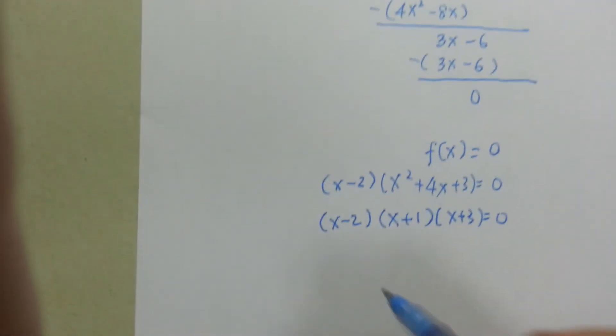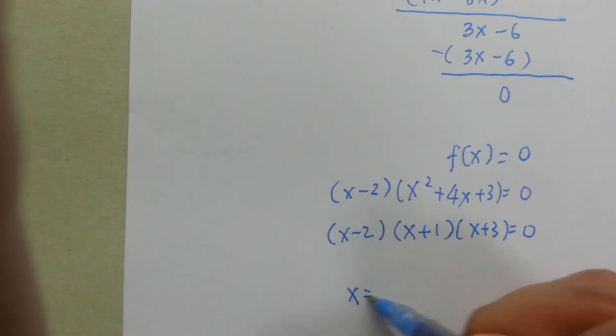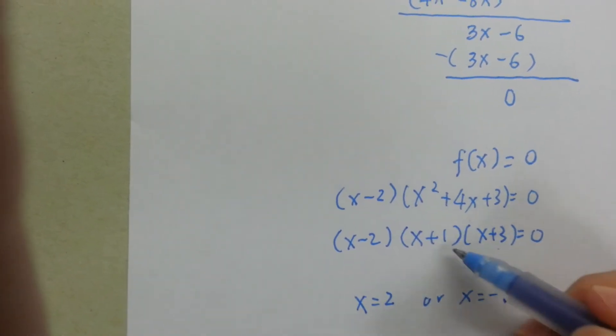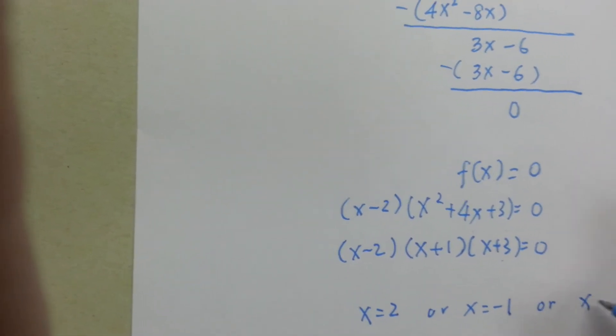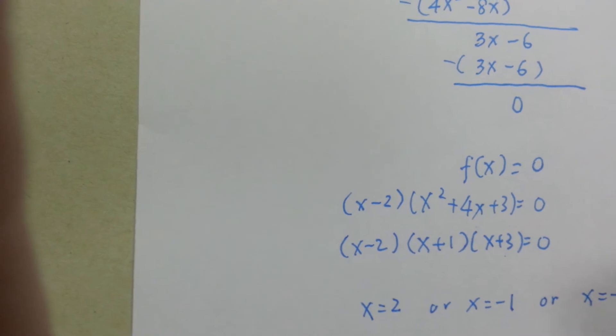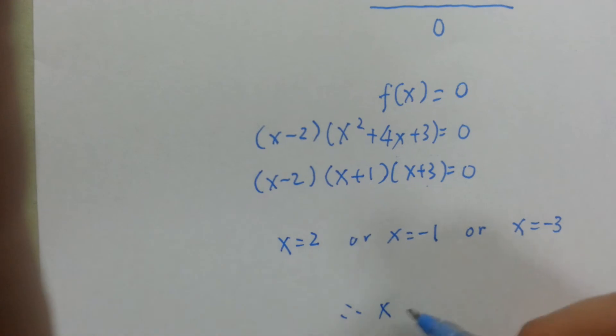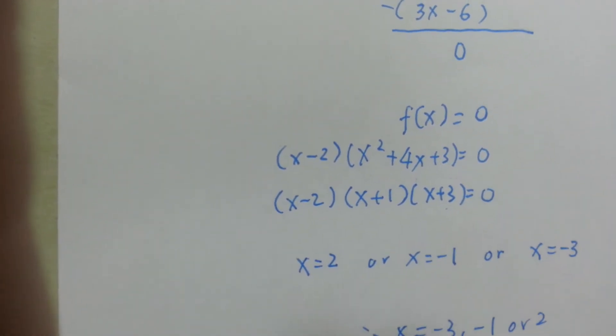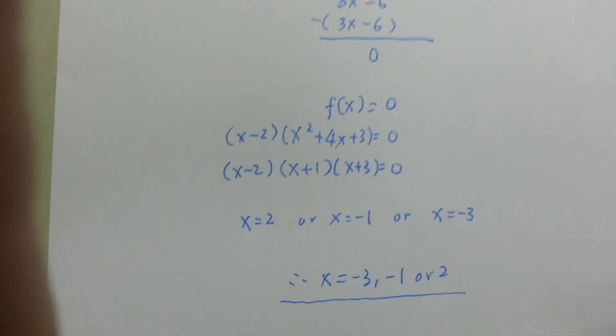And then the individual brackets will be equal to 0. So x = 2 or x = -1, or x = -3. If I want it perfect, I will arrange in ascending order. So x = -3, -1, or 2. This is my final answer. I will underline it.